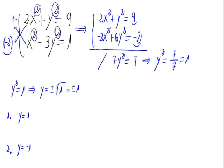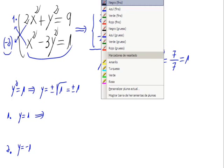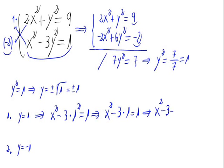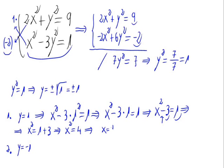Now, if y equals 1, let's substitute it into one of the equations — for example, the second one. Substituting, we get x-squared minus 3 times 1-squared equals 1, so x-squared minus 3 equals 1. Therefore x-squared equals 1 plus 3 equals 4, and x equals plus or minus the square root of 4, which is plus or minus 2.